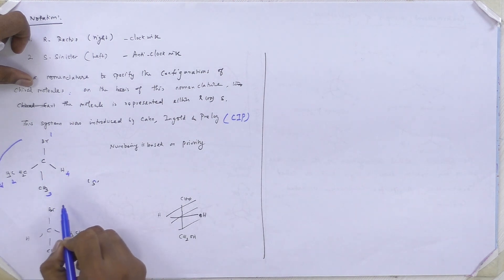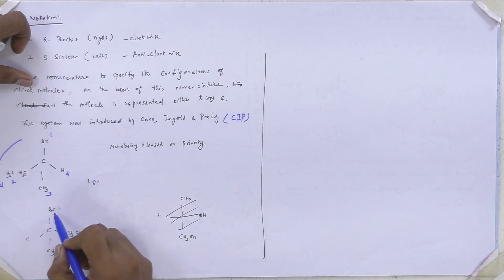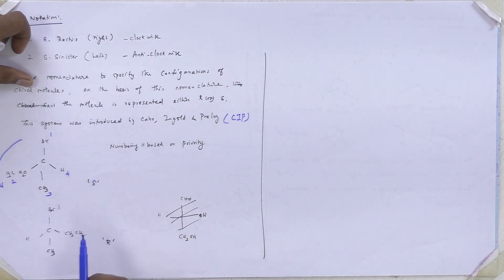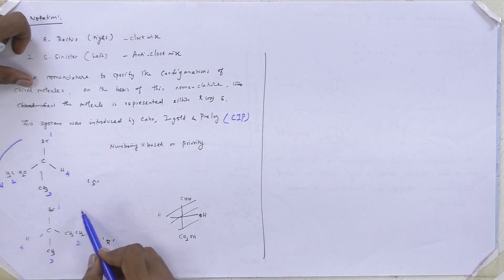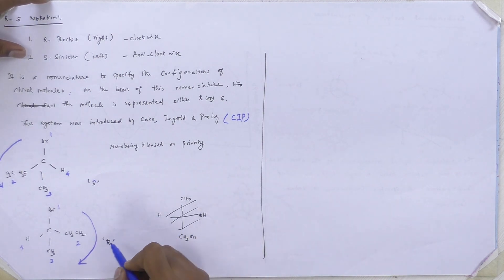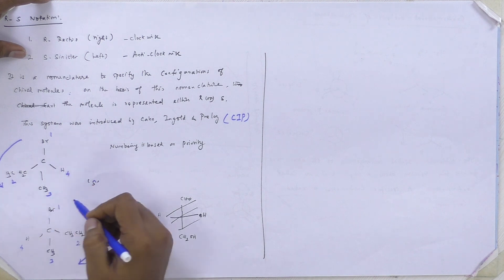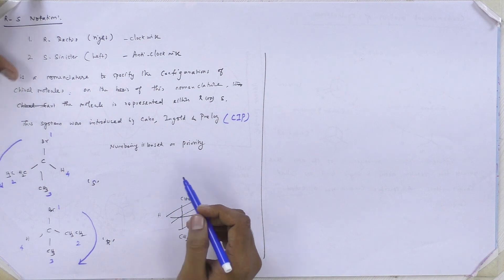Similarly, we can give the next compound. Bromine is highest priority because it has the highest atomic number. Next is ethyl, then ethyl again, and finally fourth will be hydrogen. The direction will be clockwise, so the notation is R — right side. This is the RS notation.